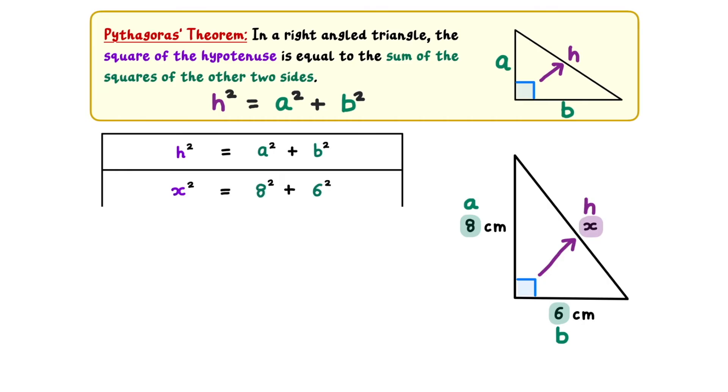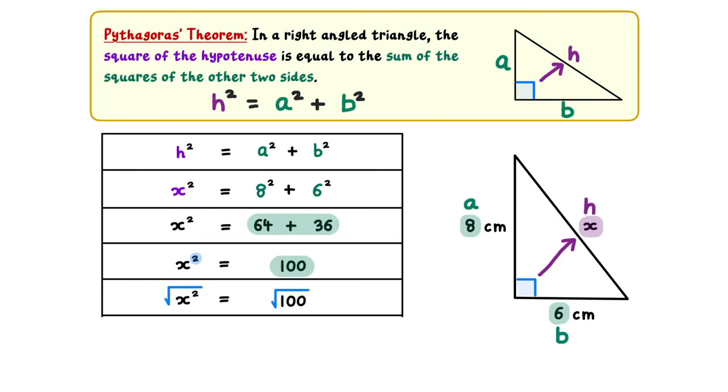Putting these values into our formula tells us that X-squared is equal to 8-squared plus 6-squared. 8-squared is equal to 64, and 6-squared is equal to 36. 64 plus 36 gives us 100, which tells us that X-squared is equal to 100. To find the value of X, we must remove the squared operation. We do this by taking the square root of both sides of the equation. The square root of X-squared is just X, and the square root of 100 is 10. So our final answer is that X equals 10cm.